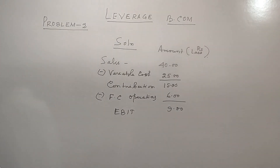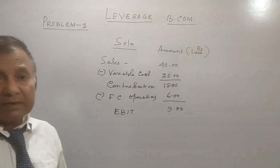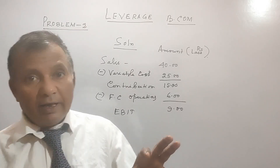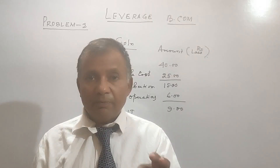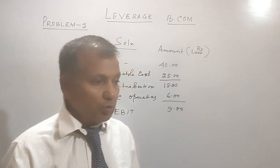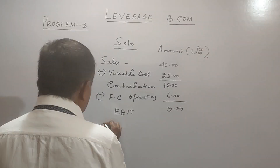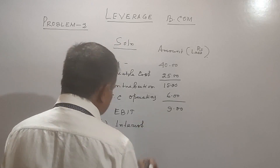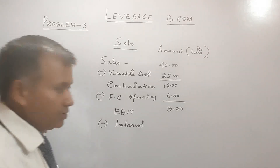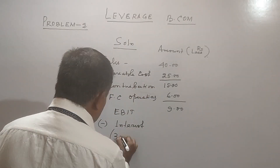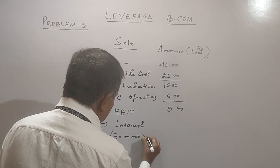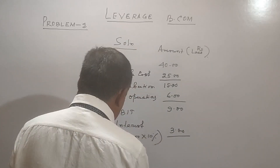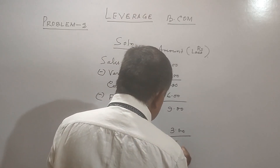Less interest. The loan is 30 lakhs with 10% interest, as given in the question. The loan amount is 30 lakhs and the rate of interest is 10%, so interest comes to 3 lakhs. Therefore, EBT is your 6 lakhs. They have not given you tax.